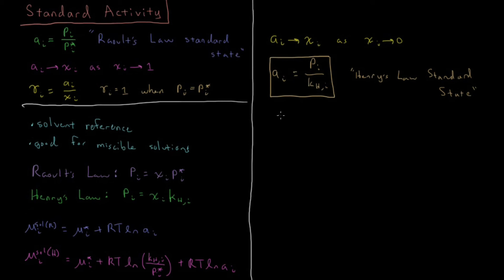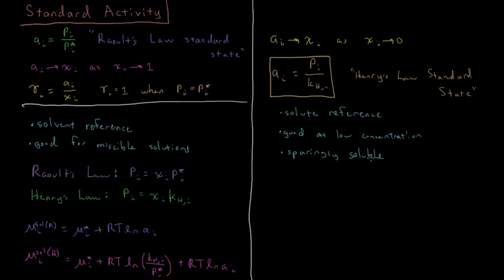This is called a solute reference because it obeys Henry's Law at very low concentrations. A solute is something which is present in low concentrations, making mole fraction a metric for concentration. It's also good for sparingly soluble solutions — things where there is not an infinite amount of solubility. For example, if you tried to mix water and hexane, you could mix a very tiny amount of hexane with water and it would dissolve and form a solution, and its activity would obey this Henry's Law standard state at very low mole fractions. But at larger mole fractions, it would form two phases which aren't miscible with each other.